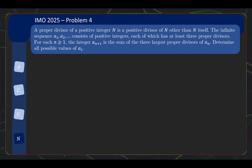The problem statement is as follows. A proper divisor of a positive integer n is a positive divisor of n other than n itself. The infinite sequence a1, a2, ... consists of positive integers, each of which has at least 3 proper divisors. For n greater than or equal to 1, the integer a_{n+1} is the sum of the 3 largest proper divisors of a_n. Determine all possible values of a1.